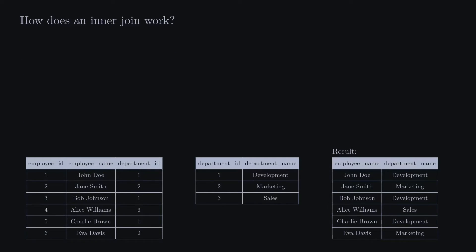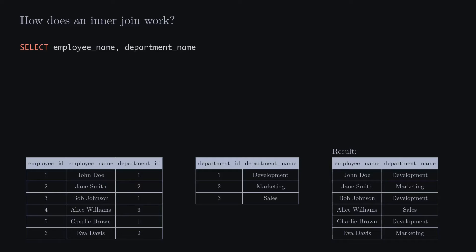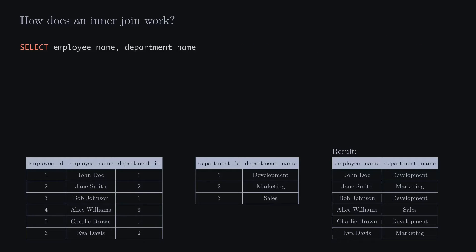The SQL command for an inner join between the employees and department table is as follows. First, we write the SELECT keyword and specify the fields we'd like to retrieve from both tables. For fields that have a common name in both tables, like the department ID, we differentiate by specifying them as employees.departmentid for the employees table and departments.departmentid for the departments table. Next, we specify the primary table using the FROM keyword followed by the table name. Then we add the INNER JOIN command followed by the table we wish to join. We specify the condition using the ON keyword — in our case, the department ID from the employees table must match the department ID from the departments table.